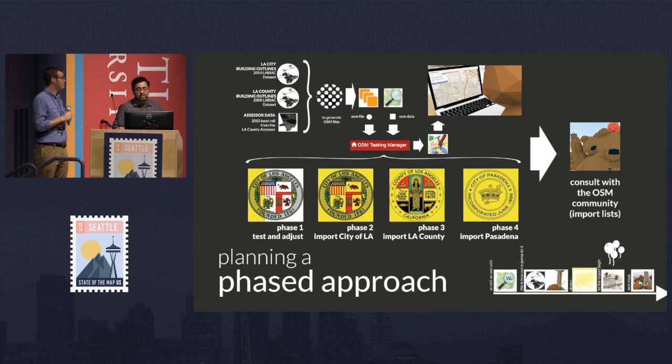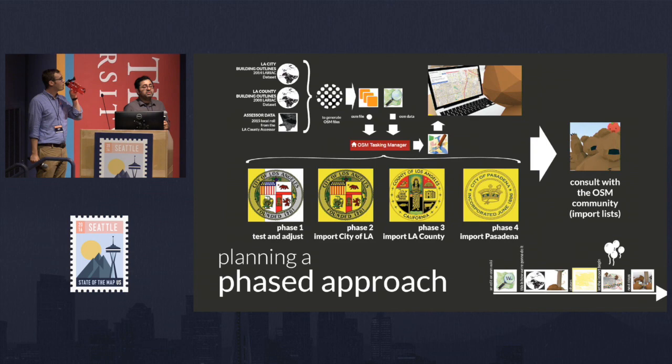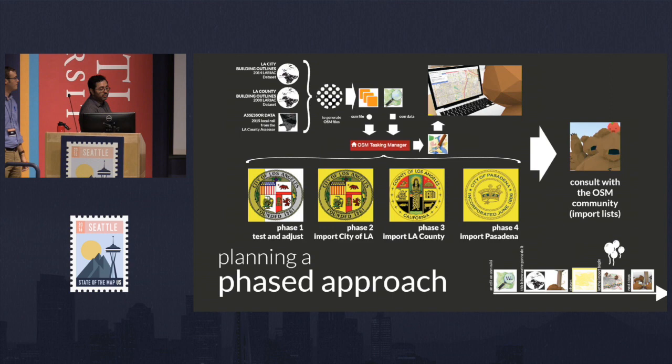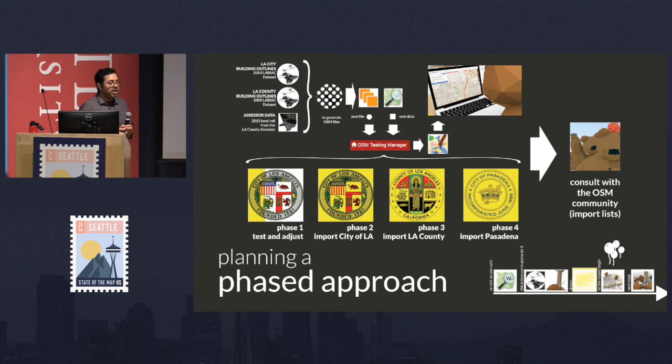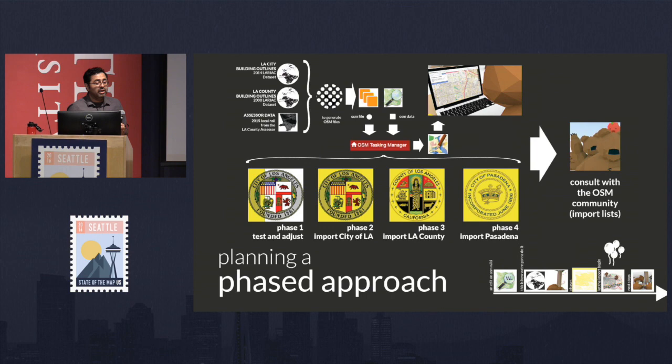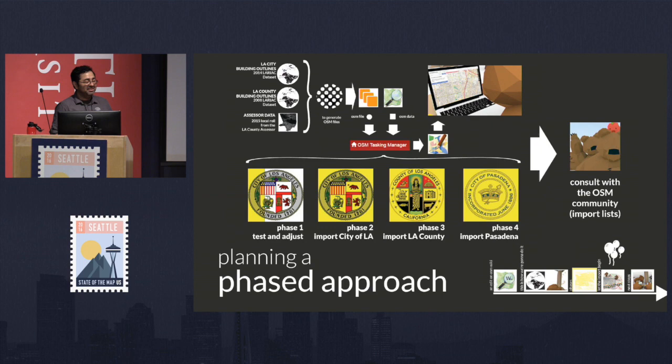Since we're talking about three million buildings, we broke them into four phases. To test whether the scripting works in a real-world setting, we started with one small part of the city of LA. After phase one was done, we re-updated the documentation, checked outcomes, and if people misinterpreted the import guidelines, we went back and updated them. Once that was updated, we went to the rest of the whole city of LA. We're now finished with the city of LA and moving into the rest of the county — except for Pasadena, because their dataset is really quite ugly.